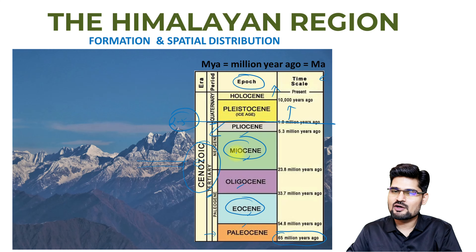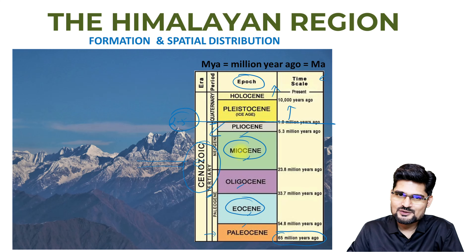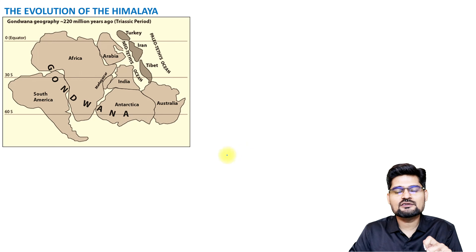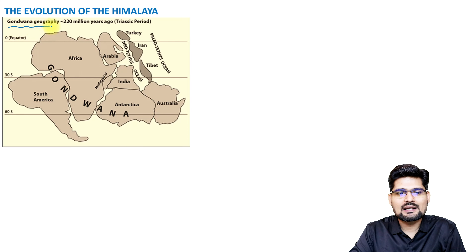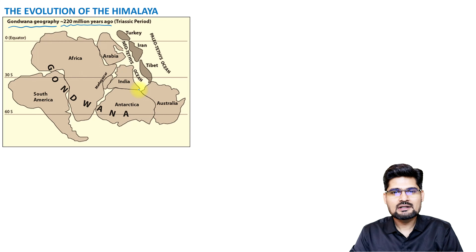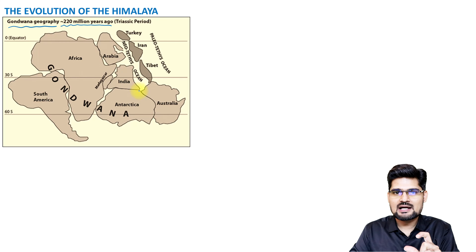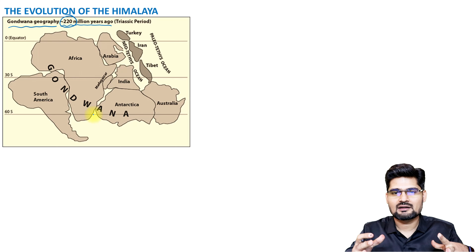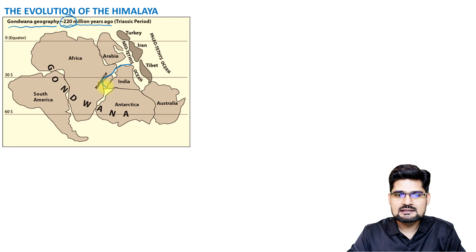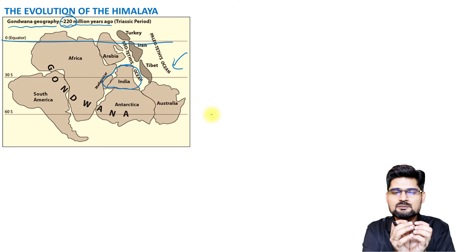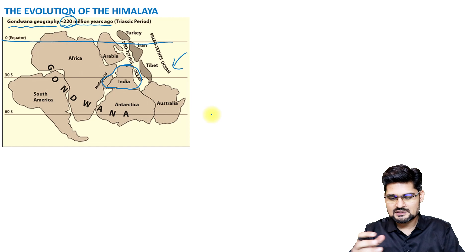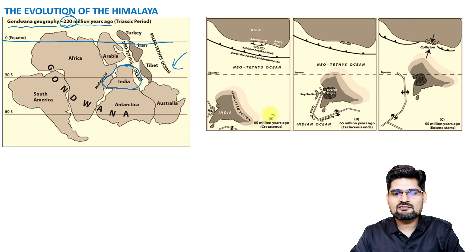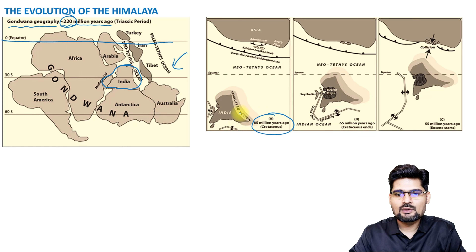Now coming to the evolution of the Himalaya through the geological time scale lens. Here we observe the geography of Gondwana Land at 220 million years ago, which is the Triassic period in the Mesozoic era. The entire landmass was south of the equator, with the Indian subcontinent visible here. From here the progress starts — sea floor spreading and movement of the plates. By 85 million years ago, in the Cretaceous period, the Indian subcontinent is moving northward toward the Asian landmass.